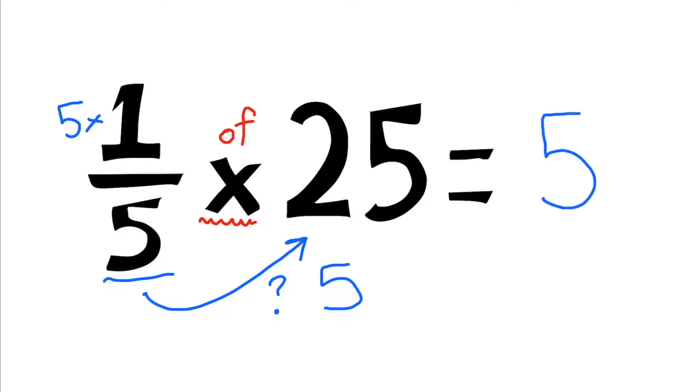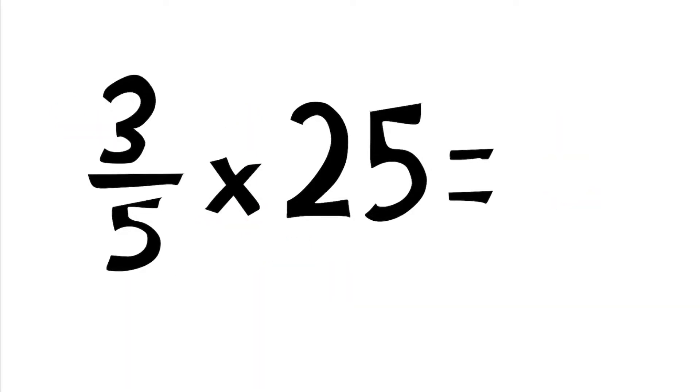Three-fifths of 25. Notice there's not a one on top now, it's three. So we need to figure out again how many fives in 25. You should know it's five. Therefore, we just figured out that one-fifth is equal to five. Therefore, three-fifths, we multiply the five by the three, which will give us 15. Three-fifths of 25 is 15.